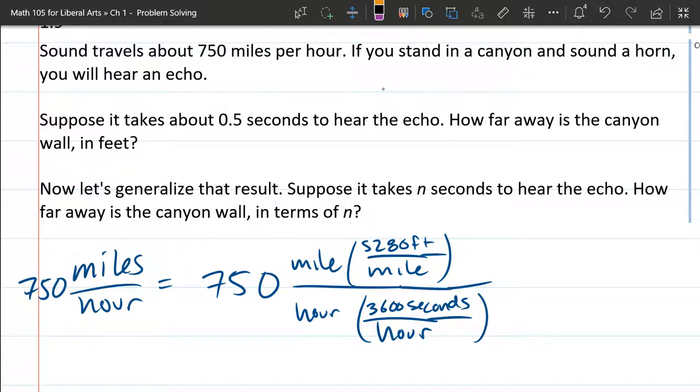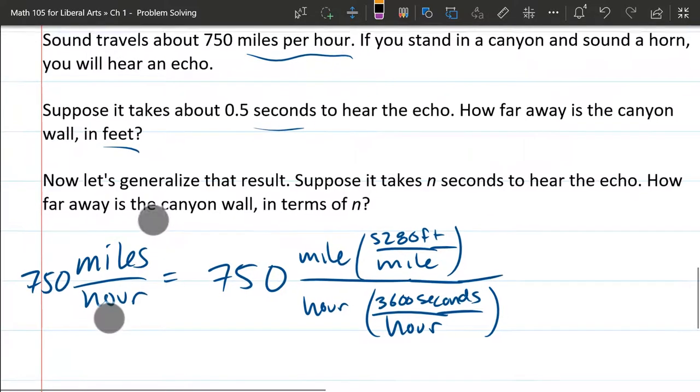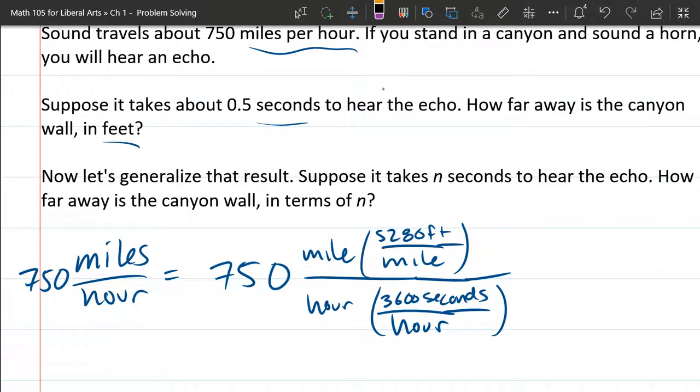So first of all, we have a big unit issue. We start with miles per hour and then our second units are seconds and feet. So let's go ahead and turn 750 miles per hour into feet per second.